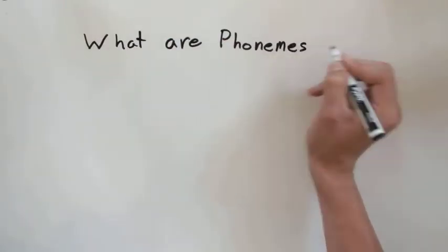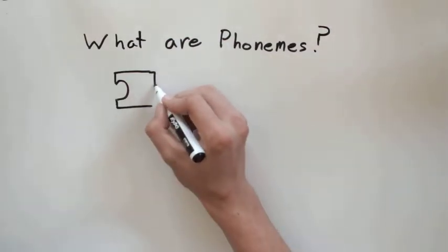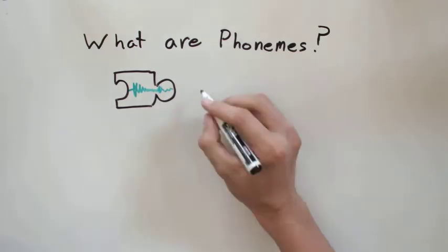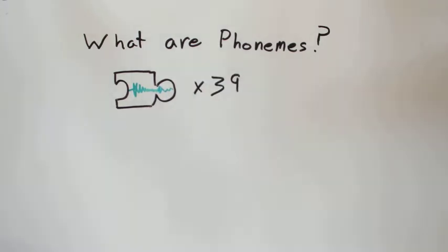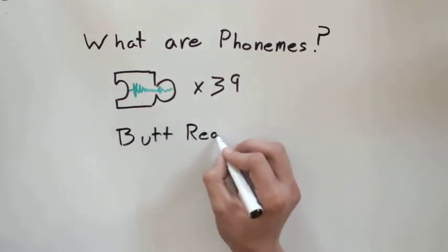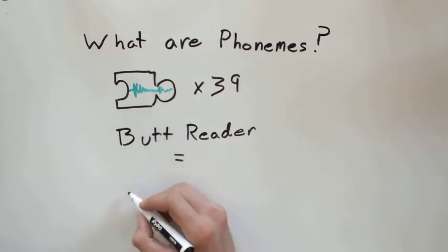Next, we gotta talk about what are phonemes. Phonemes can be thought of as the building blocks of speech. In English, there are about 39 unique sounds that make up the entire language. If you just play a sequence of these sounds one after the other, you can make basically any word in the entire English language. For example, the word butt reader would be what's right here.